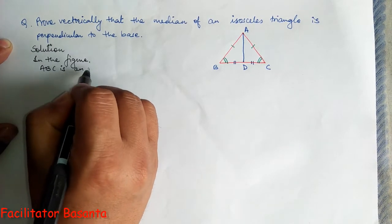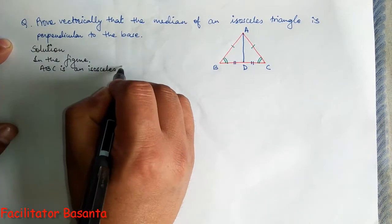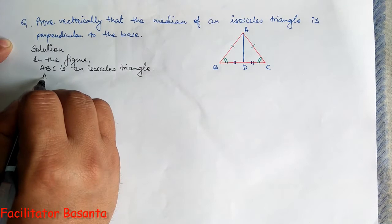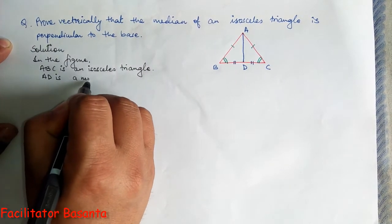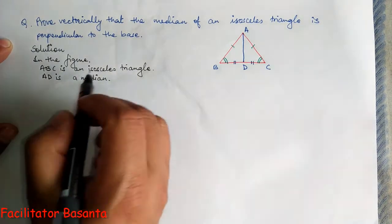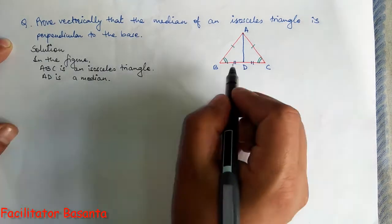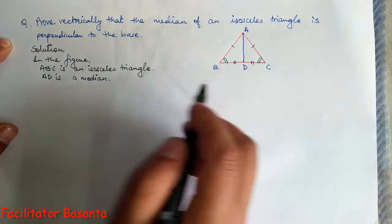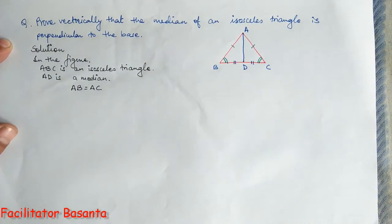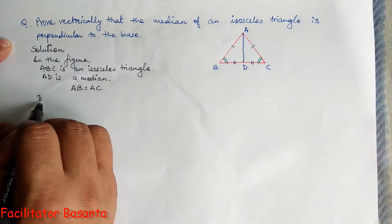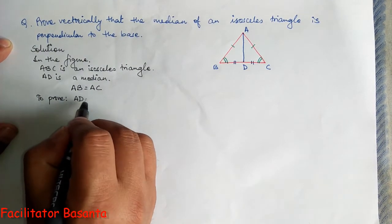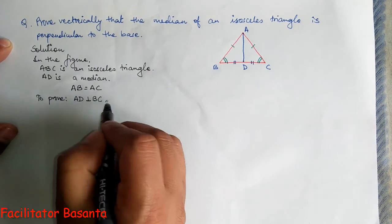ABC is an isosceles triangle and AD is a median. Since AD is the median, BD equals DC. ABC is an isosceles triangle, meaning side AB is equal to AC.